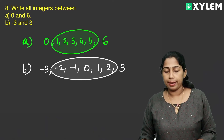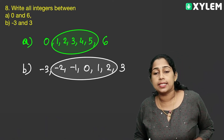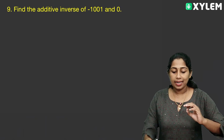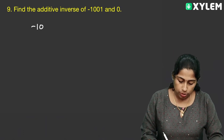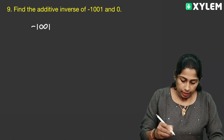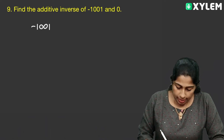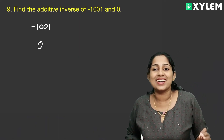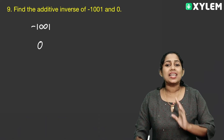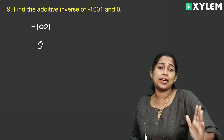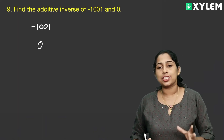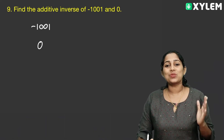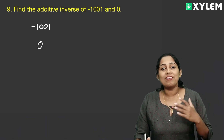The integers between minus 3 and plus 3 are: minus 2, minus 1, 0, 1, and 2. Now find the additive inverse of minus 1, 0, and 1. The additive inverse of minus 1 is 1, the additive inverse of 0 is 0, and the additive inverse of 1 is minus 1. So the additive inverse set is 1, 0, minus 1.